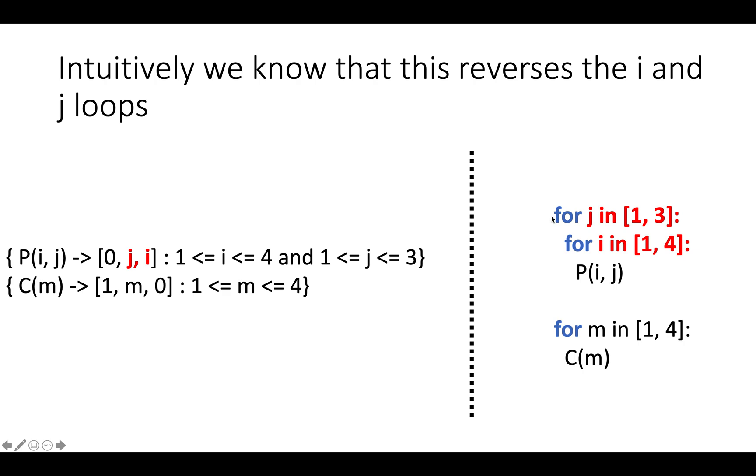So whereas before we had the statement P(i,j) surrounded by for i in 1 to 4, for j in 1 to 3, when we swap the loop index variables, we should get for j in 1 to 3, for i in 1 to 4.